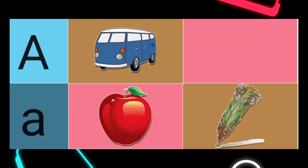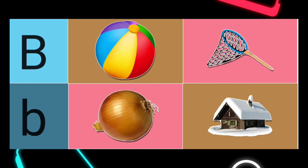A is for. Right answer: A is for Apple. B is for. Right answer: B is for Ball.